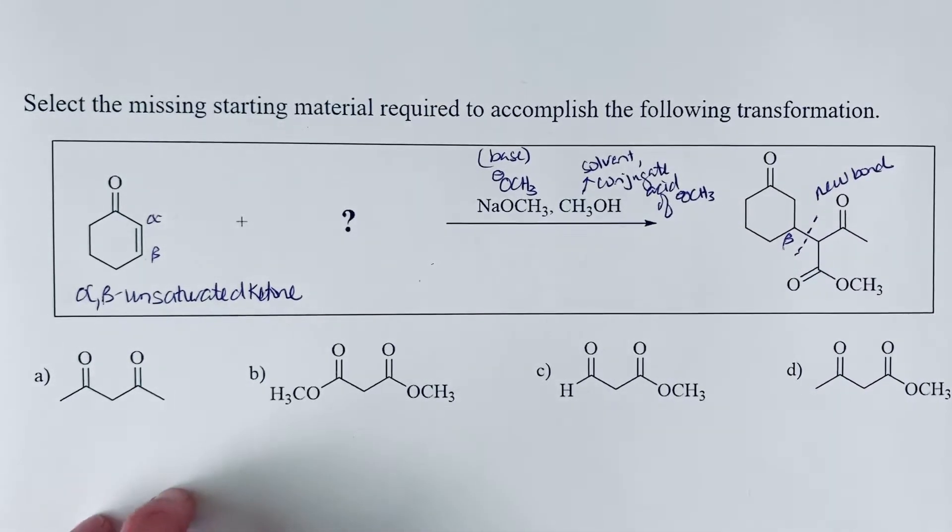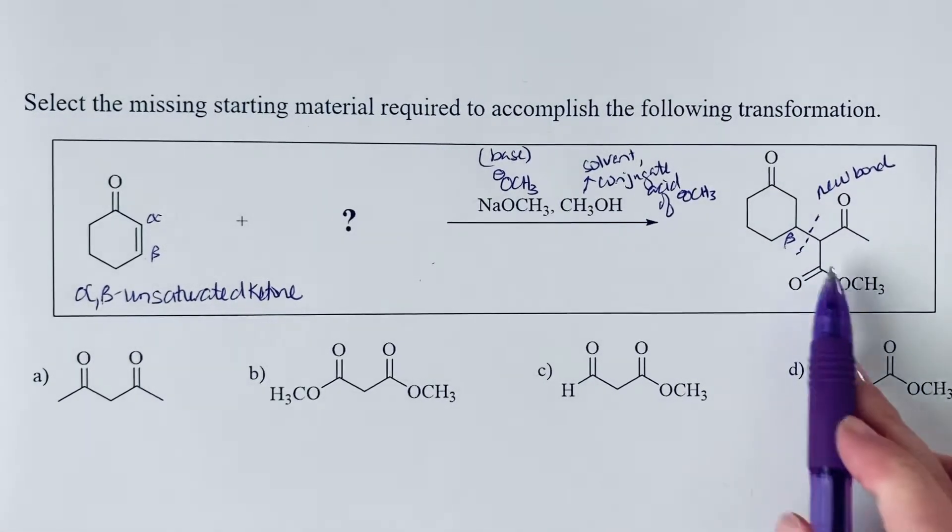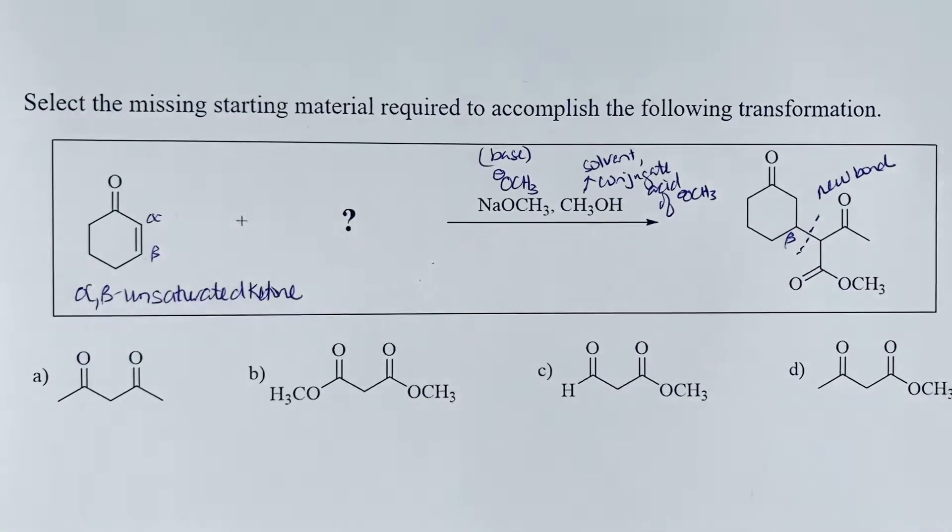And so what we have seen is for a nucleophile to add to the beta carbon of an alpha-beta unsaturated system, that the nucleophile should be a relatively stable nucleophile, a weaker nucleophile.